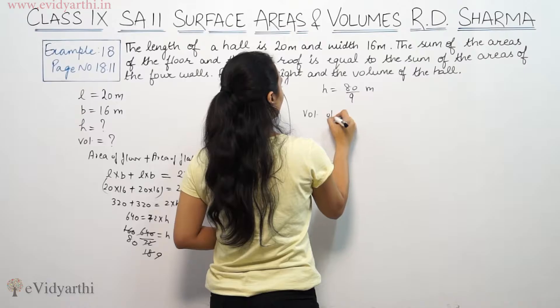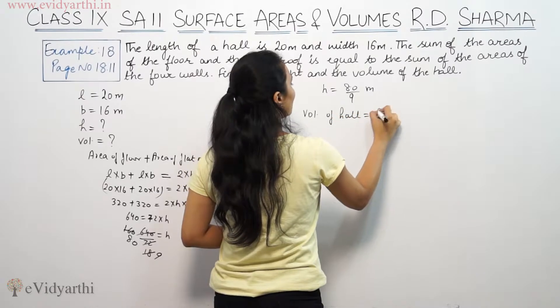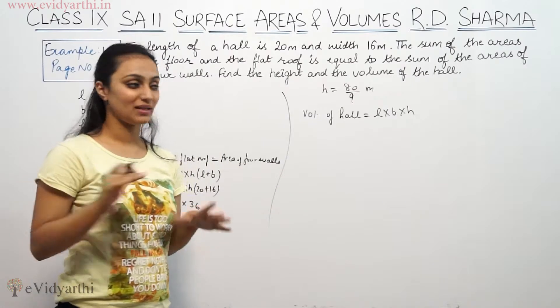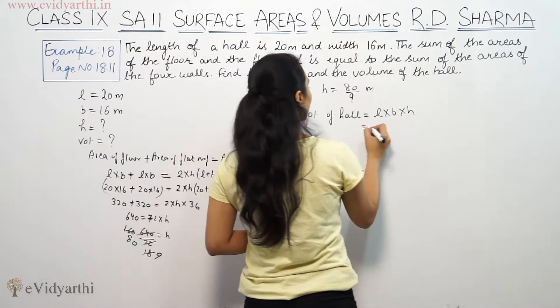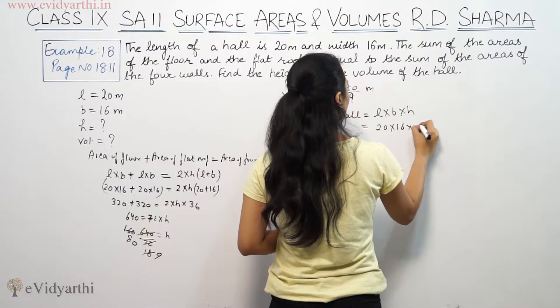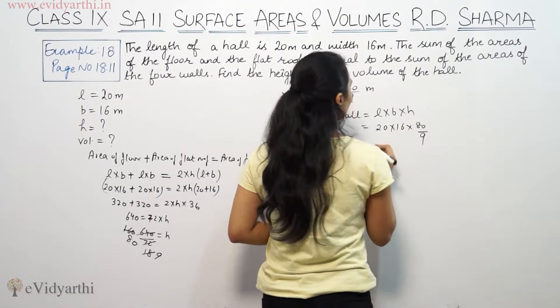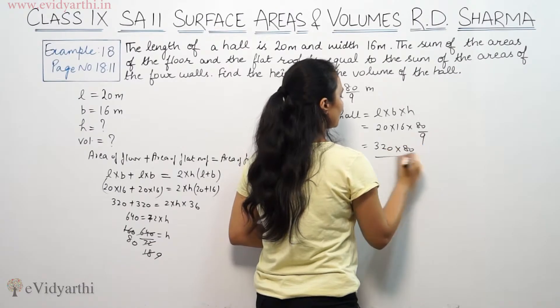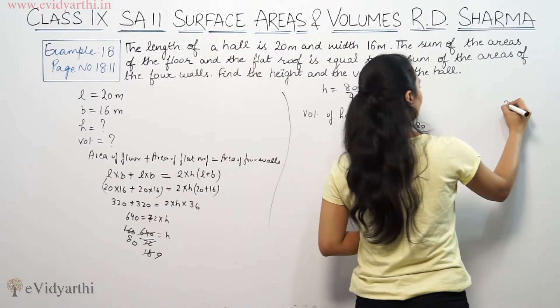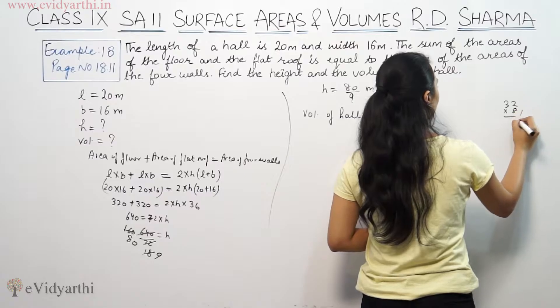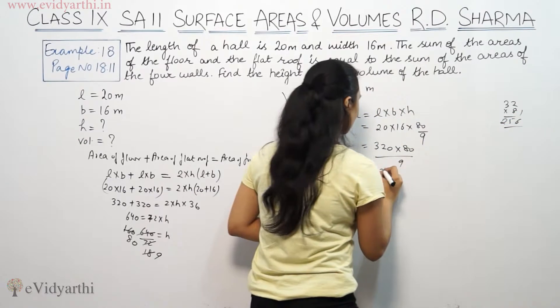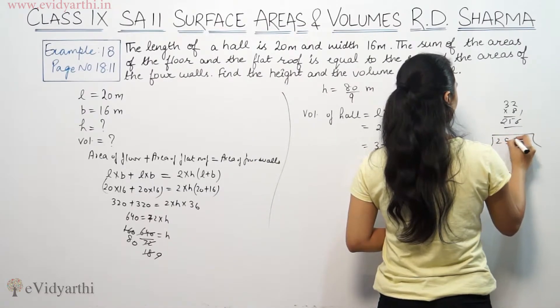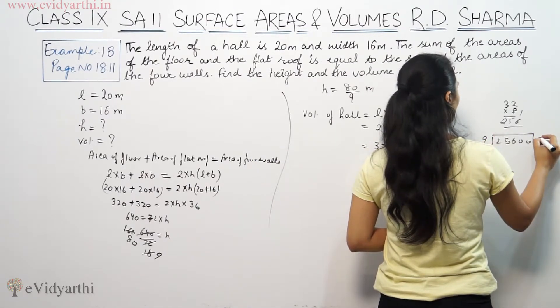Now, volume of hall. Volume is equal to L into B into H. That means, length is 20, breadth is 16, and height is 80 by 9. So, this is 320 into 80 by 9. So, 32 into 8, this is 25600 by 9.